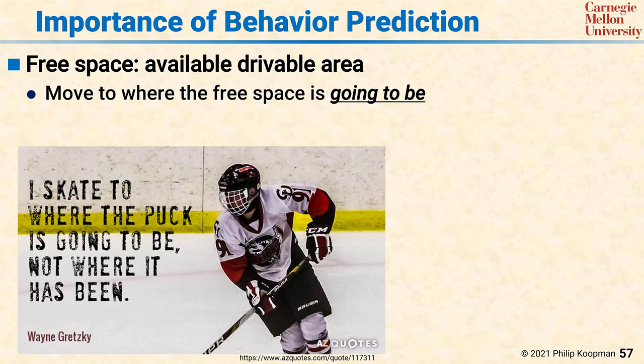Prediction often does not show up explicitly on an autonomy pipeline — there's planning and there's perception — but planning and perception interact when you need to decide what type of object you're looking at and what its likely future behavior is. While some systems simply do extrapolation of current path — saying there's a car going 30 miles an hour in a particular direction and it will probably keep going at about that speed and direction — in fact, cars can turn quickly, but people are even more challenging.